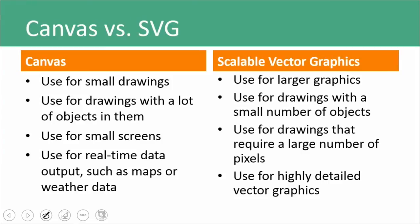So when would we want to use Canvas versus SVG? Canvas is something we would want to use for small drawings or drawings with a ton of different objects in them. We can use Canvas for creating video games, and it's great for complex things like that. It's good for small screens and also great for real-time data — like a stock ticker, NBA scores, maps, or weather data. Canvas is absolutely wonderful for that because it updates in real time. Scalable vector graphics you want to use for larger graphics, for simple pages with fewer objects, and for drawings that require a ton of pixels because it gives us a lot of detail.